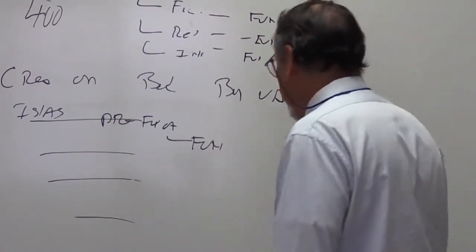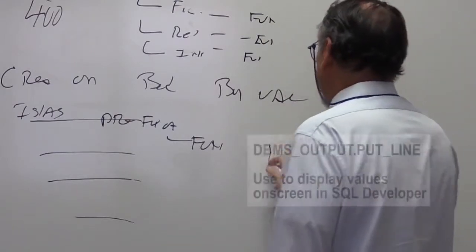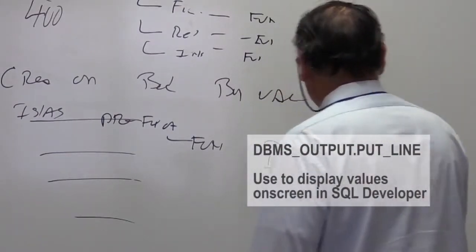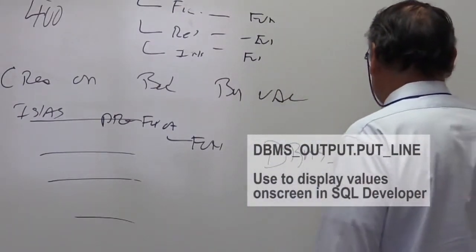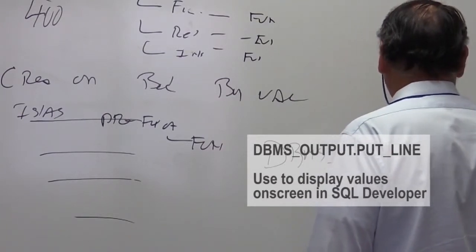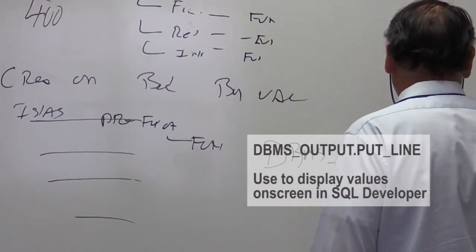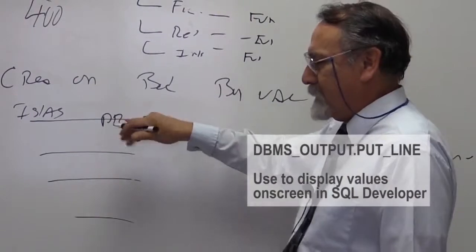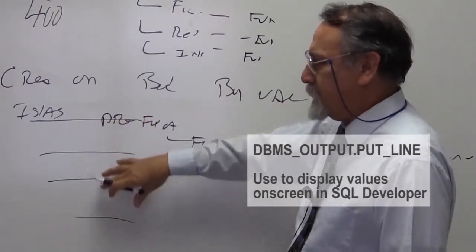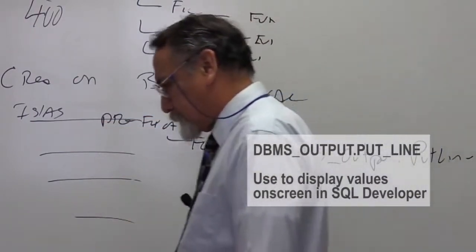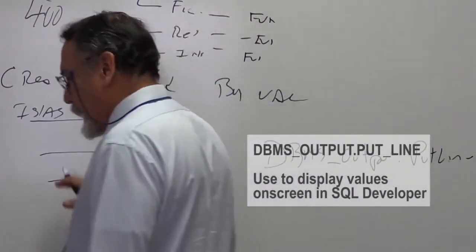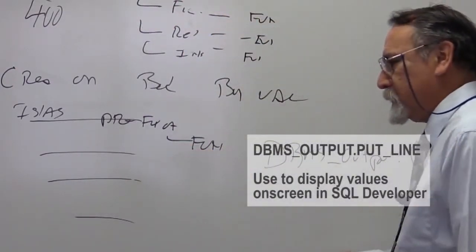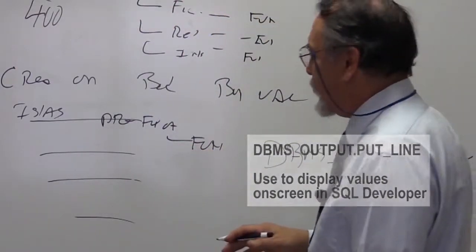In all this process, don't forget your friend DBMS_OUTPUT.PUT_LINE. Remember that — this is your friend that you have to embed in all this process to help you keep track of any issues that you may have.